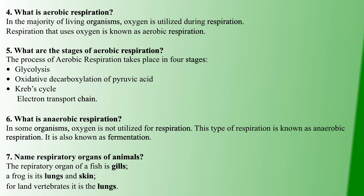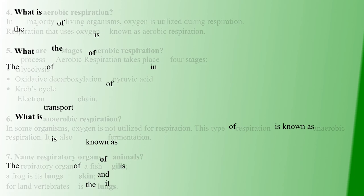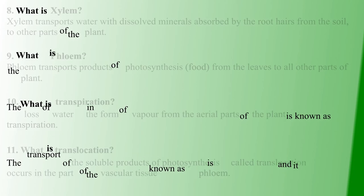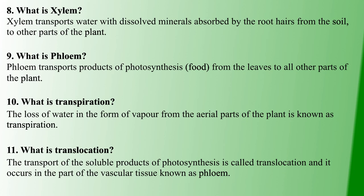Aerobic respiration uses oxygen. Land vertebrates use lungs for respiration — for example, humans use lungs. Fish, frogs, and other vertebrates also perform aerobic respiration using their respective organs.